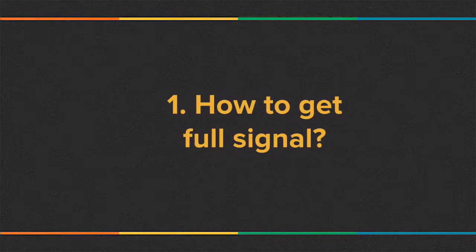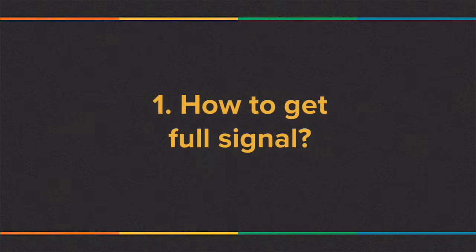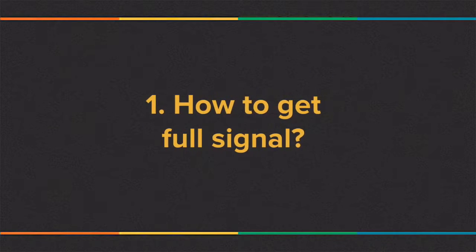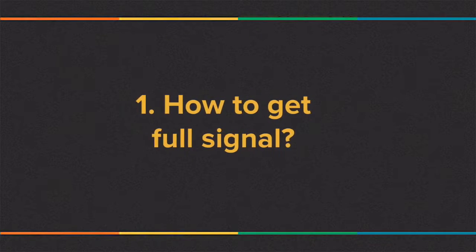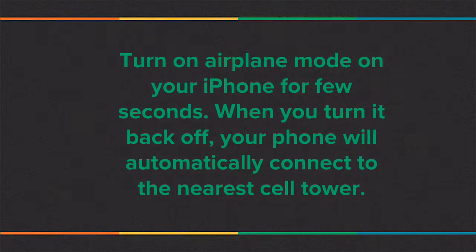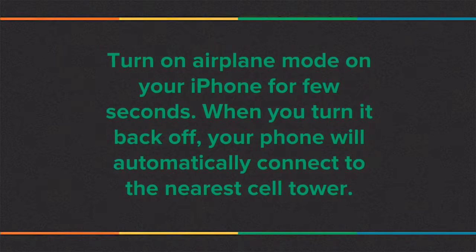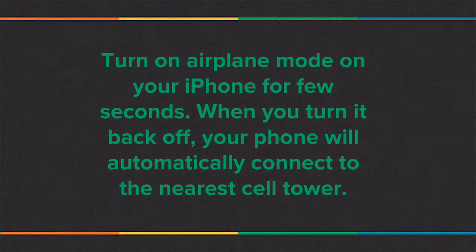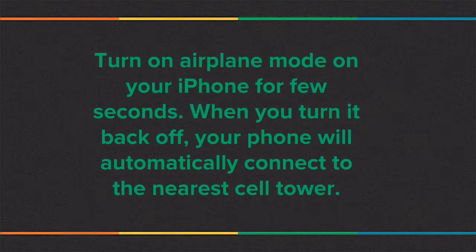Number 1: How to get full signal. Sometimes we get poor signal on our iPhone, so to recover the full signal, follow these steps. First, flip your iPhone into airplane mode for a few seconds. When you turn it back off, your iPhone will automatically connect to the nearest cell tower, so you will get better signal.